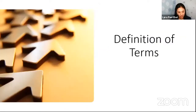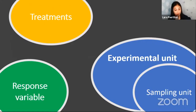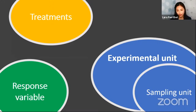Before we discuss further this designing experiment, we need to understand some terms. The common terms that we usually encounter in doing research are treatment or treatments, experimental unit or sampling unit, and the response variable. Some of you may already be familiar with these terms, but for those who are just starting their research or learning statistics, we need to understand these terms.